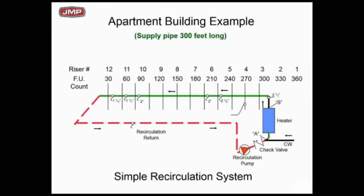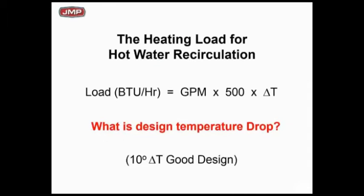As you start thinking about wasting water, think about the fixtures and the runouts from the main to the fixture. How long should that runout be on riser number 12 — from where we recirculate (the green pipe) to where your shower head is? Is that going to be 10 feet, 50 feet, 100 feet? How long should we allow that to be? We'll keep talking about it as we go.